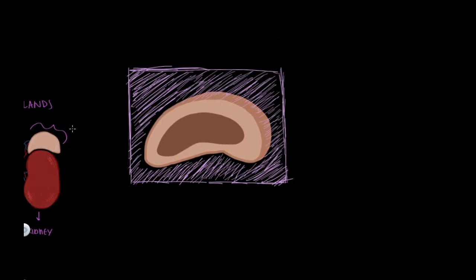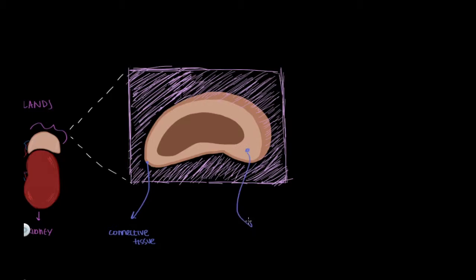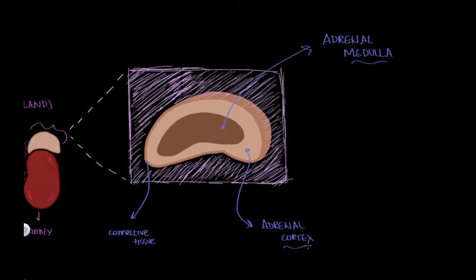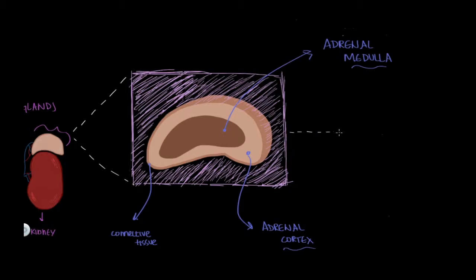Here I've pre-drawn this adrenal gland and sliced it down the middle. As you can see, there are three obvious areas to the gland: this outer layer of connective tissue, this portion on the inside called the adrenal cortex, and this dark region in the center called the adrenal medulla. These two areas, the adrenal medulla and cortex, are both involved with the stress response in very distinct ways.